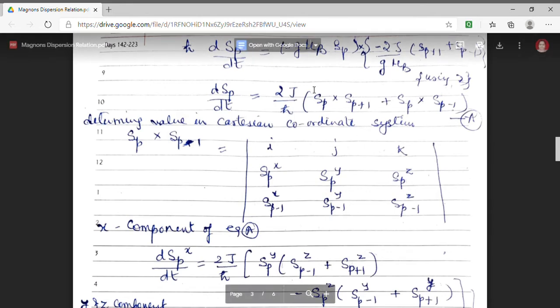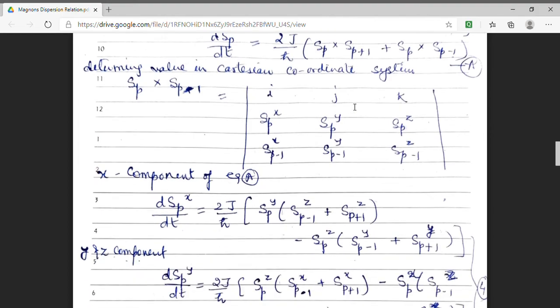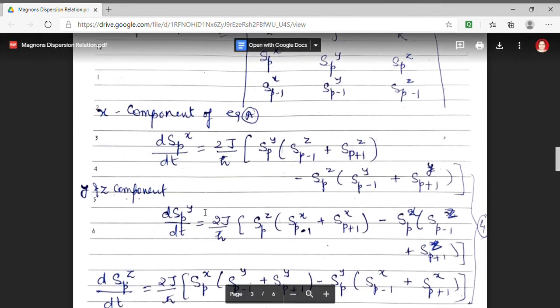This is the component of when sp interacts with sp minus 1. Similarly, can be obtained for the first term, sp cross sp1. Similarly, I have written the y and z components.